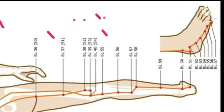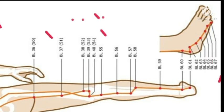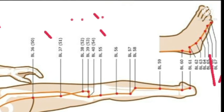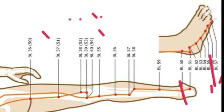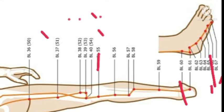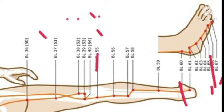The five element points of this meridian are BL67 which is a metal point, BL66 is the water point, BL65 is the wood point, BL60 is the fire point, and BL40 is the earth point. UB and kidney is the water meridian.